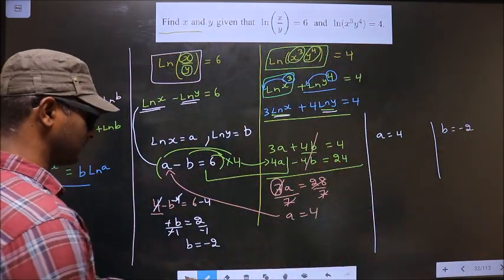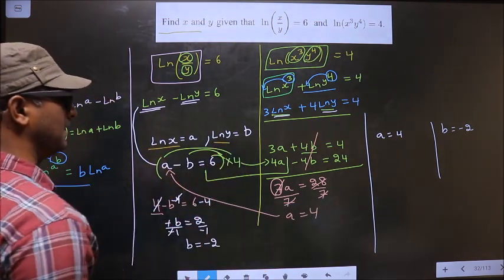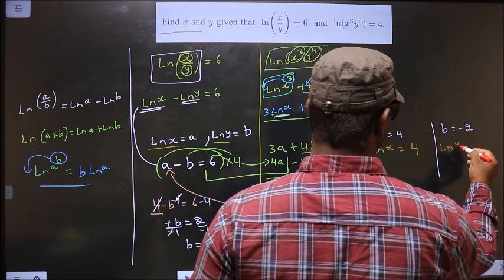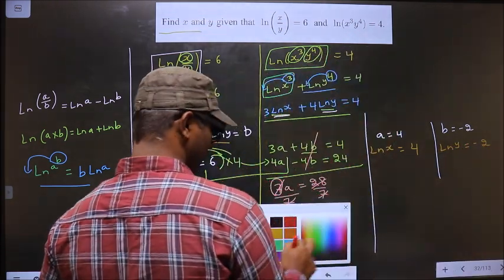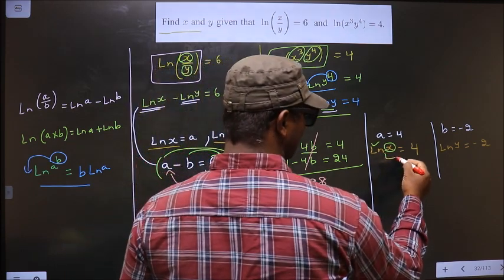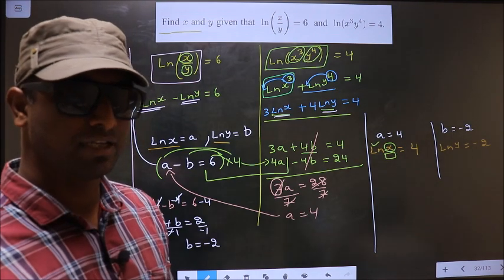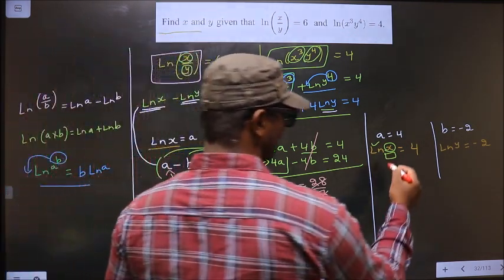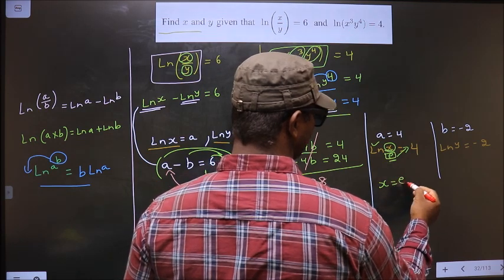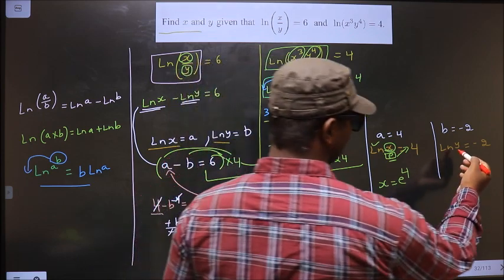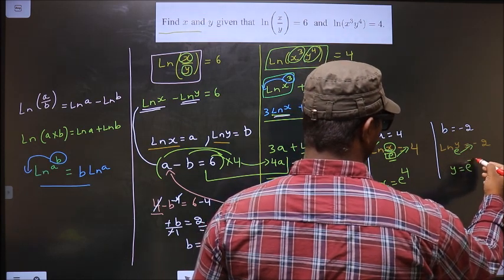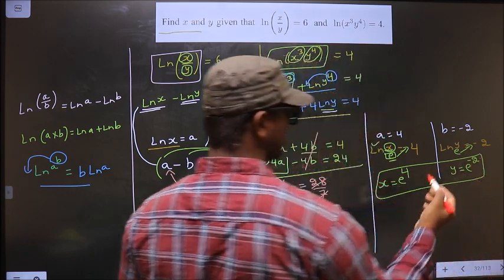Now we replace a with ln(x) and b with ln(y). So ln(x) = 4 and ln(y) = -2. To remove the natural logarithm, since no base is specified, we take it to be e. Therefore x = e⁴ and y = e⁻². This is our answer.